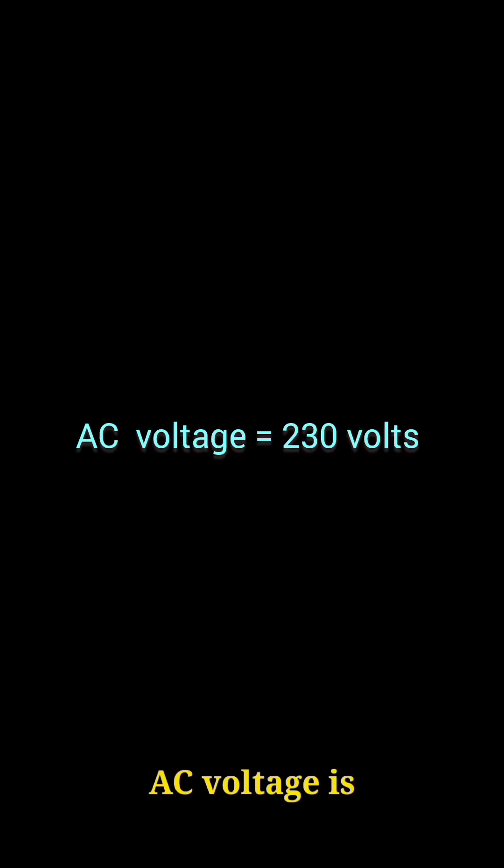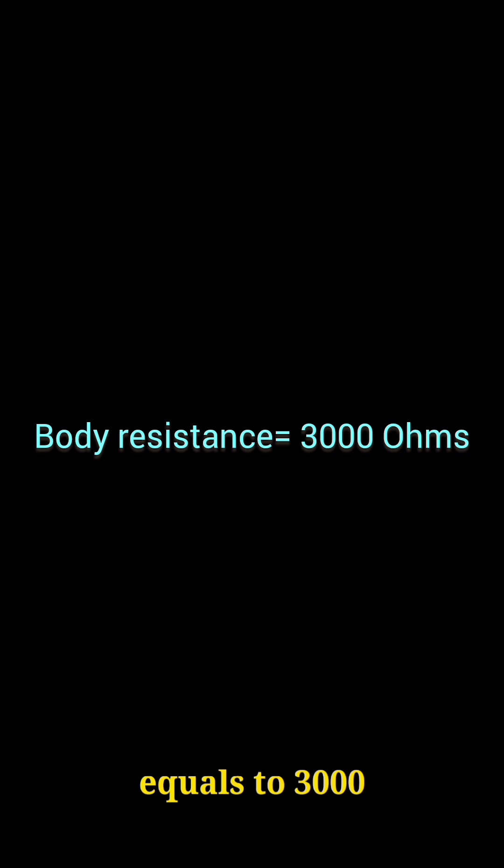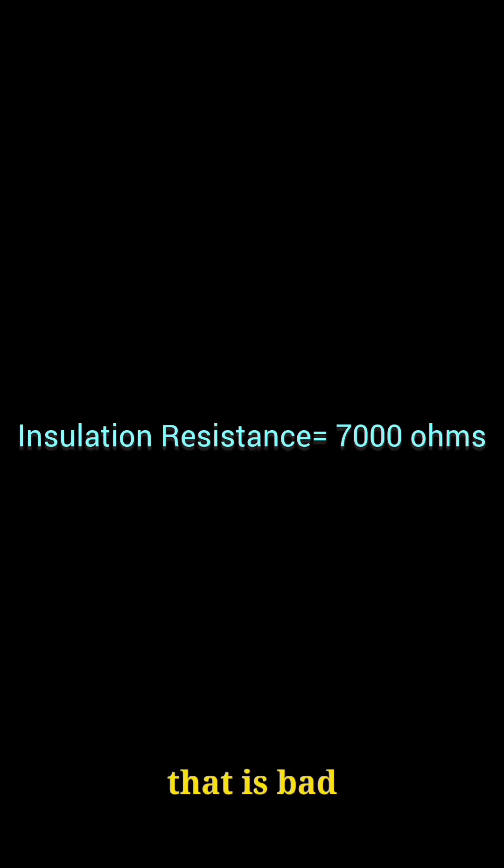AC voltage is 230V. Body resistance is 3000 ohms. Insulation resistance, that is bad wire moisture, is 7000 ohms.